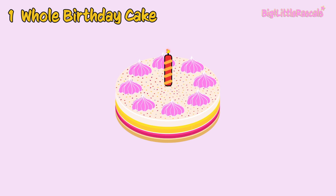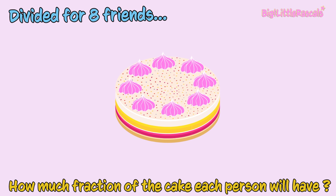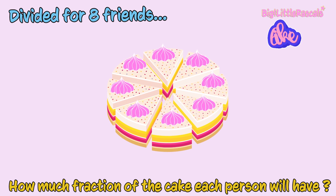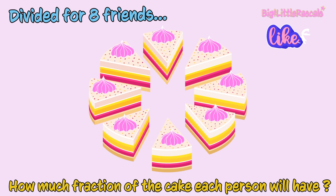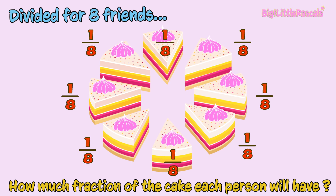Let's say we have a birthday cake here. We will divide the cake for eight friends. After we blow the candle, we will cut the cake into eight slices equally. So, how much of the cake will each person have? One cake divided into eight — each part is one out of eight. Each person receives one eighth.